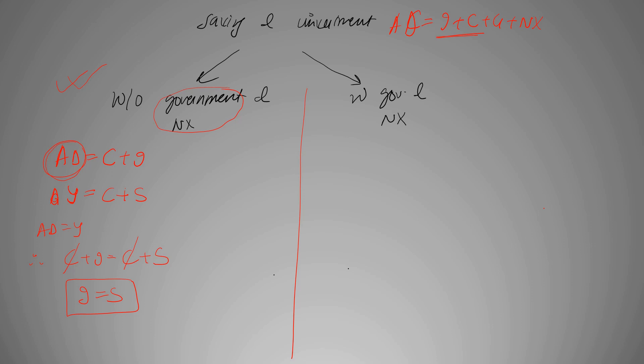Now the second part is with government and net exports. If we have AD is equal to C plus I plus G plus NX, and our income can either be consumed or saved as previously discussed.